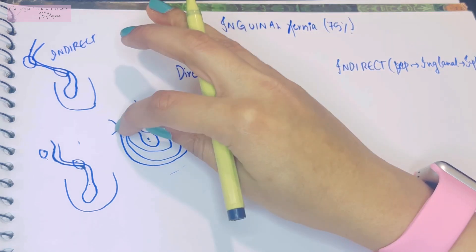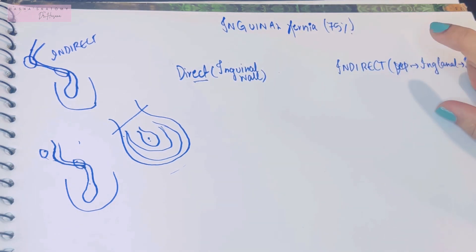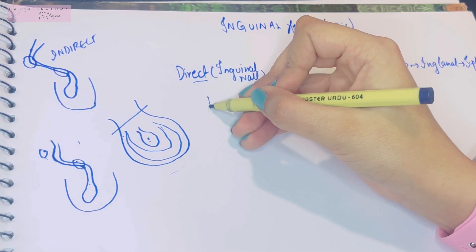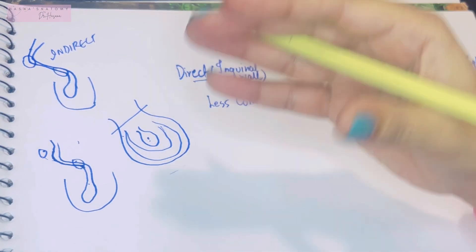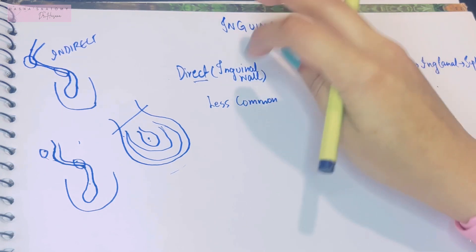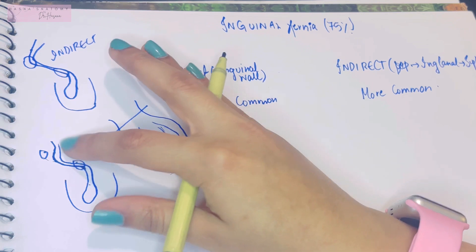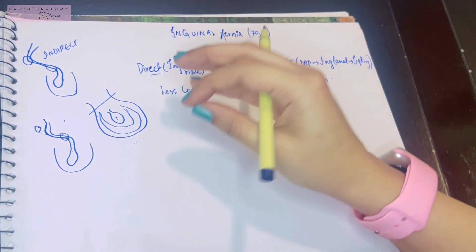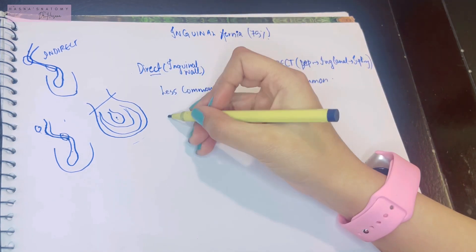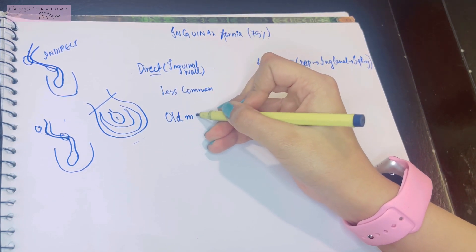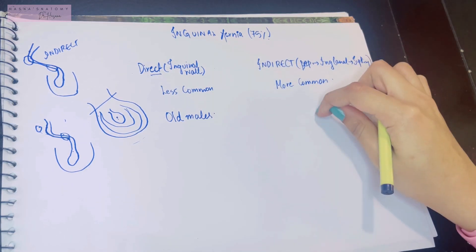Direct inguinal hernia is less common than indirect inguinal hernia. It is caused by weakness in the abdominal muscles or abdominal wall. Because of this, direct inguinal hernias mostly occur in old males.